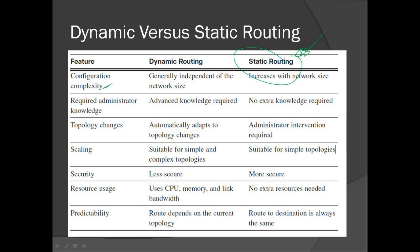In terms of configuration complexity, dynamic routing is generally independent of the network size. Since routers update one another with their configurations and changes, it is independent of how big the network is — there's no problem because routers keep one another updated. In static routing, the configuration becomes complex because you are manually defining the path. Imagine having so many routers to configure — it becomes very tedious for the network engineer or administrator.